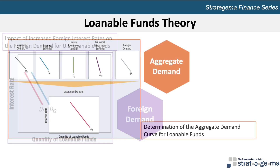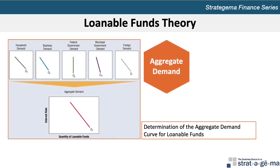The aggregate demand for loanable funds is the sum of the quantities demanded by these separate sectors at any given interest rate, as shown in this exhibit. Because most of these sectors are likely to demand a larger quantity of funds at lower interest rates, it follows that the aggregate demand for loanable funds is inversely related to the prevailing interest rate.